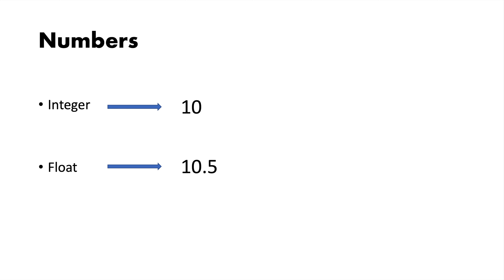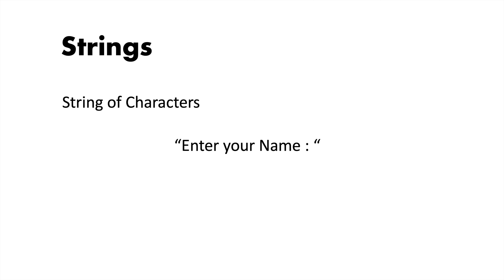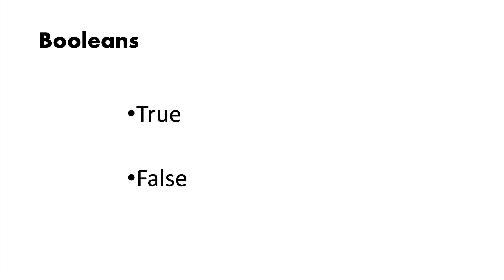In some languages like Python, integers and floats are actually separate data types and require a bit more care with the syntax. String data is used to capture data like what is your name. Boolean data types have a strange name but are simply a value that is either true or false.